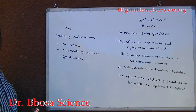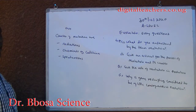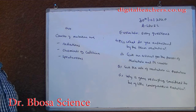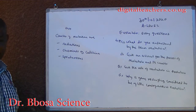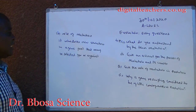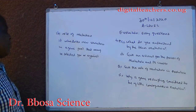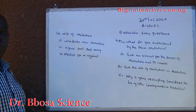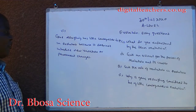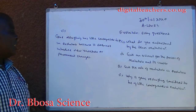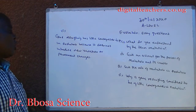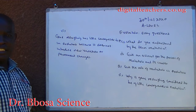Causes of gene mutation include radiation such as X-rays, ultraviolet light, chemicals such as colchicine, or it can be spontaneous. Role of mutation: it introduces new variation in a gene pool that may be selected for or against. Gene recycling has little consequence in evolution because it does not introduce new variations or permanent changes.